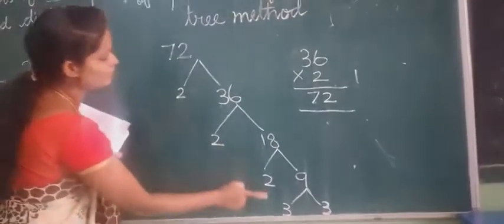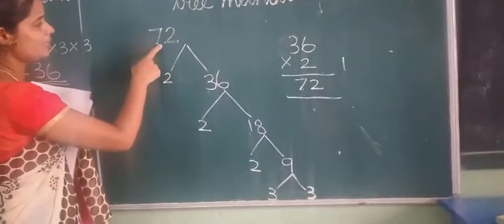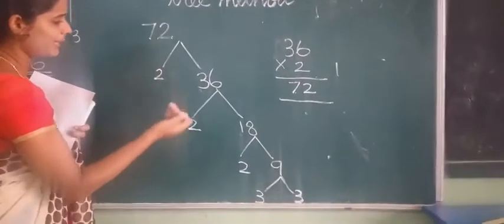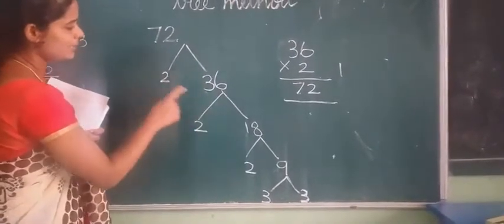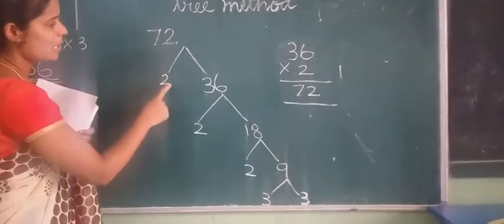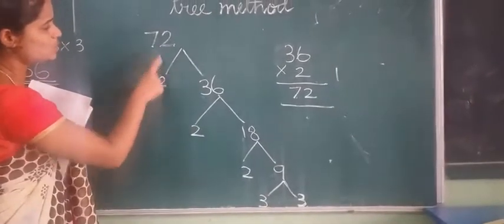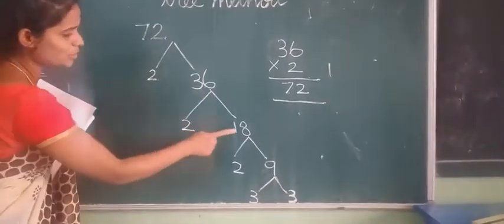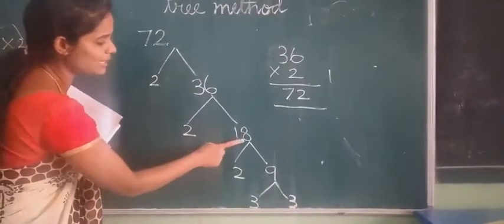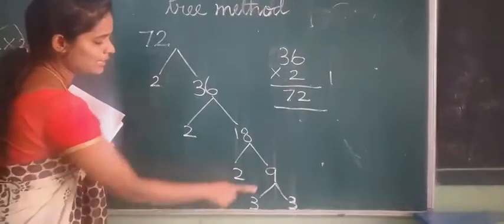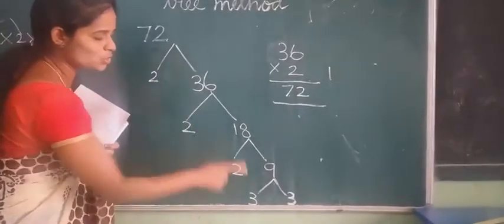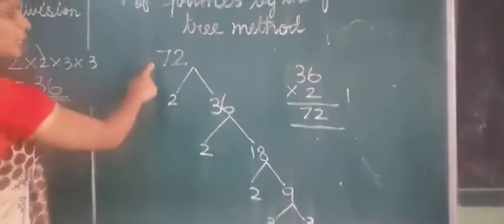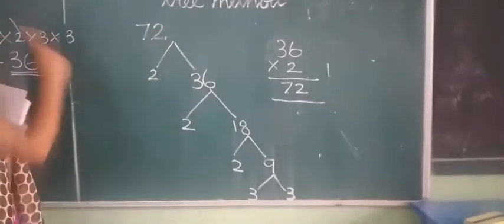We have come to the last number. So, this is called tree method. By using number 72, we have to keep on dividing by using the tree method. Like, 72, right? How many 2's are 72? 36 and 2, 72. And then, how many 2's are in 36? 2 into 18, 36. Then, how many 2's are there in 18? 9 2's are 18. Now, in 9, 2nd table we cannot use. So, we are using 3rd table. 3 3's are 9. After doing all this, the same as the previous one we used, right?